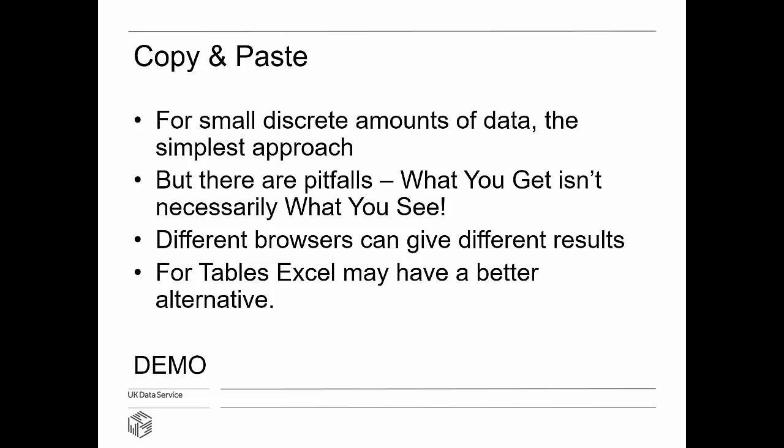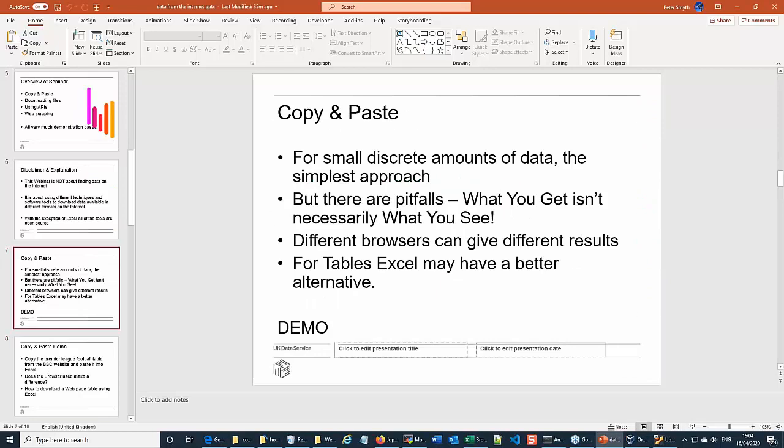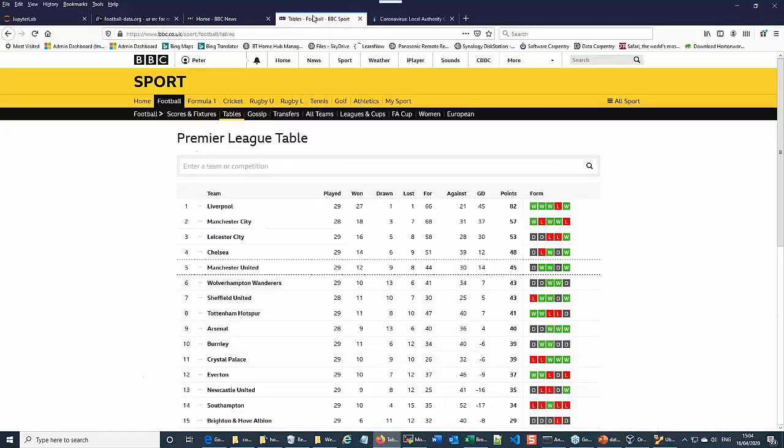Starting off with copy and paste. If you just want a small amount of data — an article or a table or something — you may find it easy to just copy from the browser screen and paste it into a Word or Excel document. The slight caveat is that what you get isn't necessarily what you see on the screen, and depending on what browser you're using, you can get different results. For tables, Excel may have a better alternative.